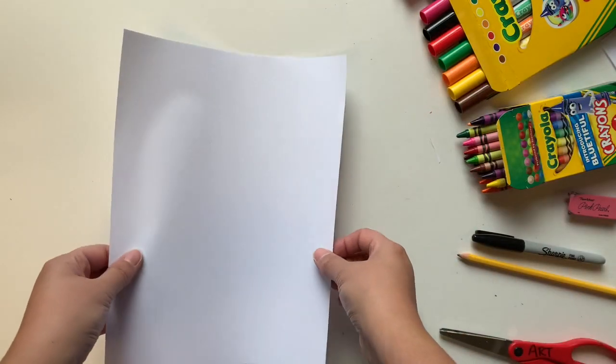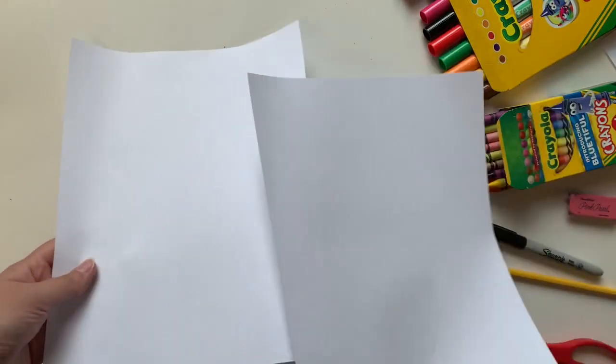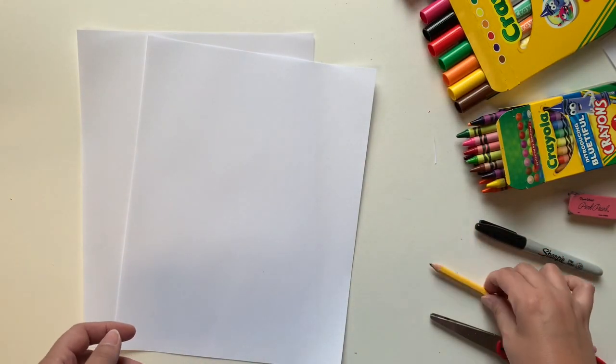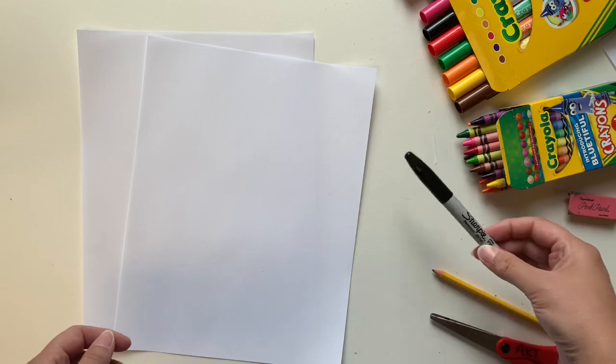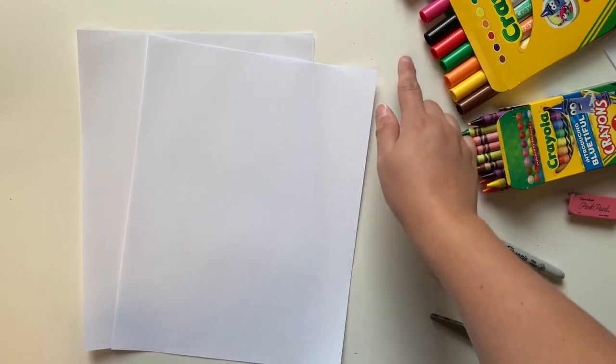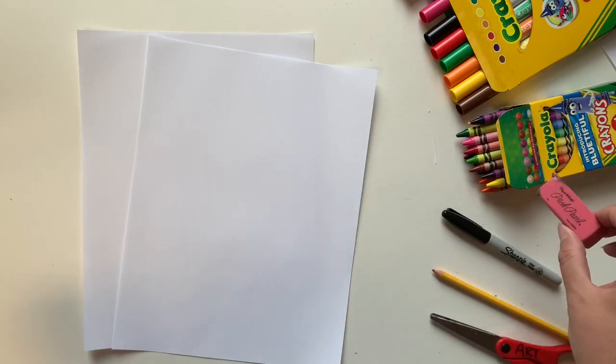What you need today to create our radial name design is two pieces of paper, regular copy paper. You're going to need a pair of scissors, a pencil, some sort of black marker like a Sharpie or permanent marker, or you can just use a regular black marker. Even if you don't have any of those, you could use a black crayon. And an eraser is always handy to have.